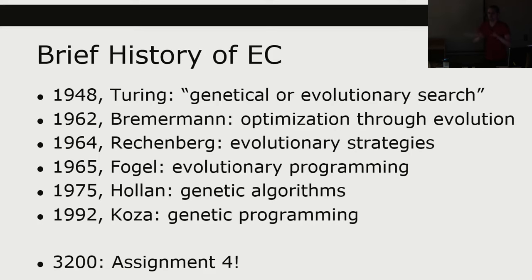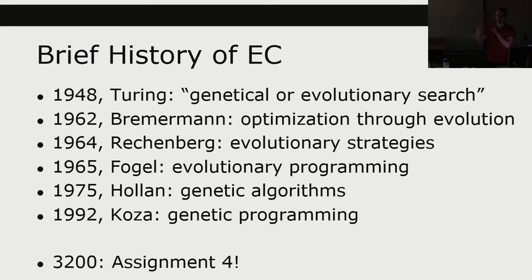Evolutionary computation is not a recent phenomenon. Right before 2011–2012, when deep learning started to become the hot thing in machine learning, evolutionary computation was the hot thing — it was capable of doing things that standard machine learning like neural networks wasn't able to do at the time. Back as far as Alan Turing in the 1940s and 50s, he talked about the possibility of a genetical or evolutionary search in computing — before a computer even existed. Insane how much he envisioned.